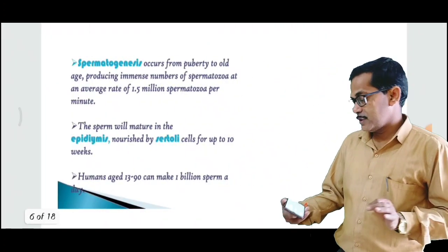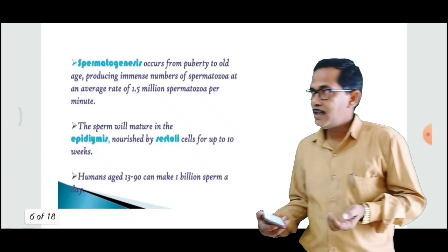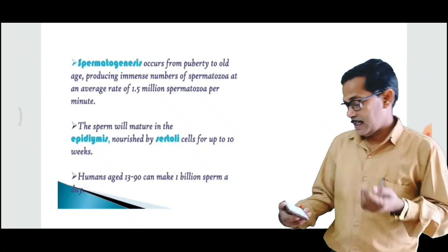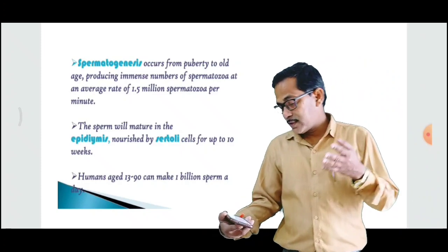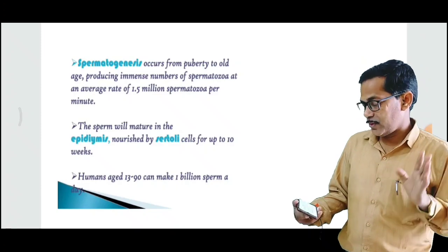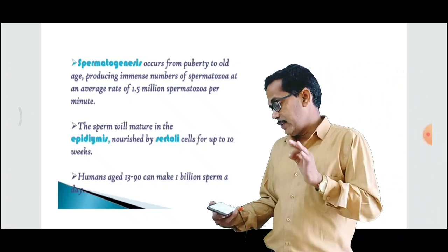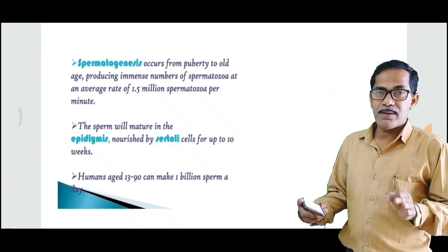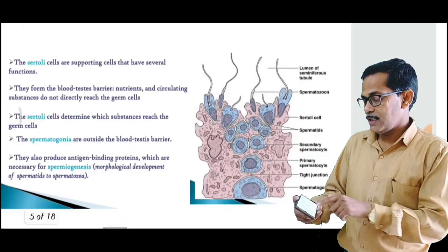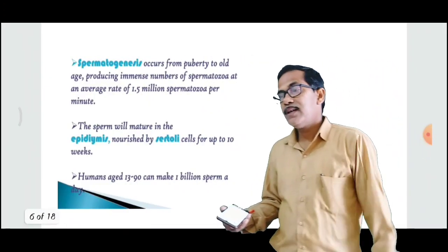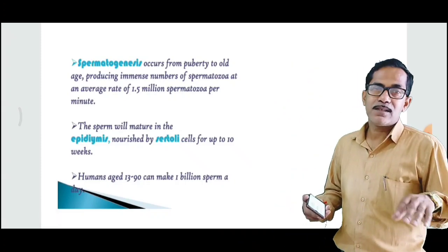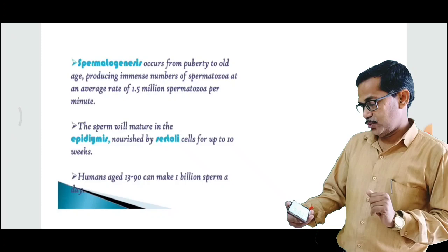Spermatogenesis occurs at the time of puberty. It starts at the time of puberty, producing immense numbers of spermatozoa. The sperm will then mature in the epididymis, which is the structure on top of the testes. In the epididymis, the sperm stay for some time and mature there.